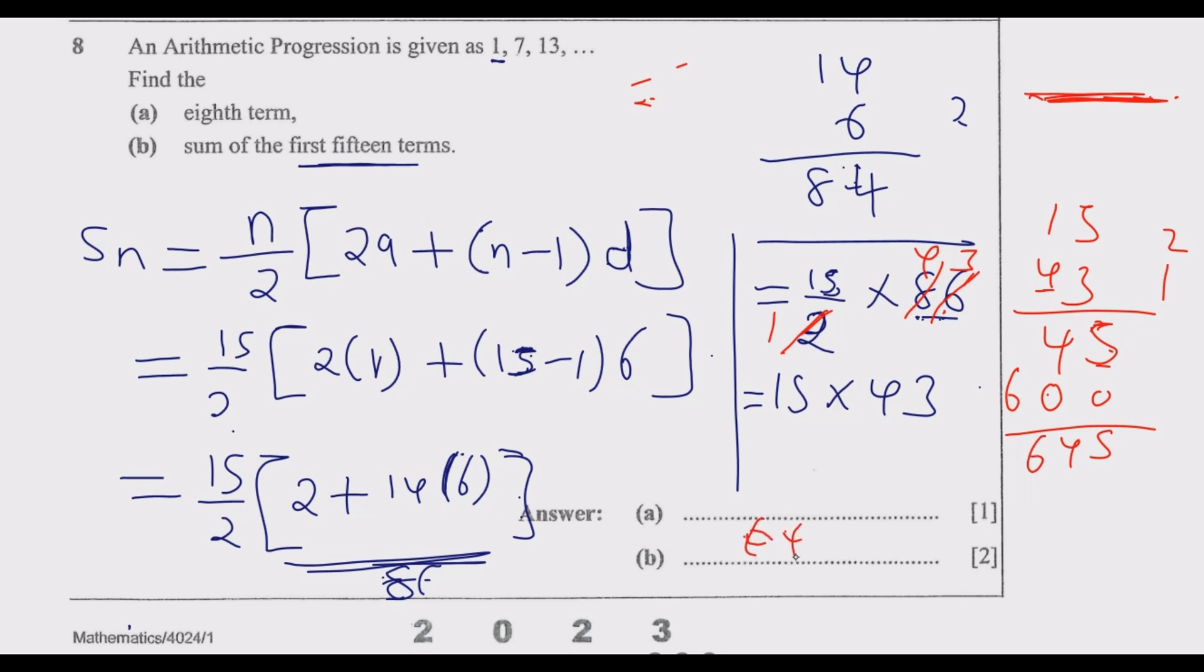So 645 is the answer that you need to put here. Once you do that, then you get the two marks. So this is how you answer this question to get the three marks.